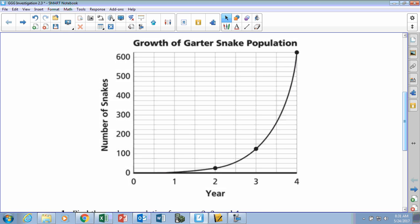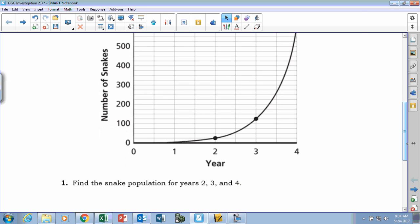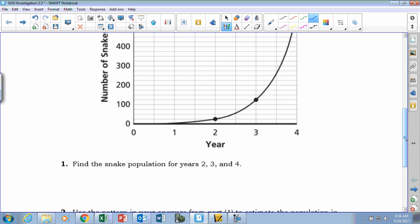All right, so what'd you come up with? First of all, what are these increments? If this is 100, these have to be 25, right? So year two is how many snakes? Twenty-five snakes, good. And then year three is 125, good. And then year four?